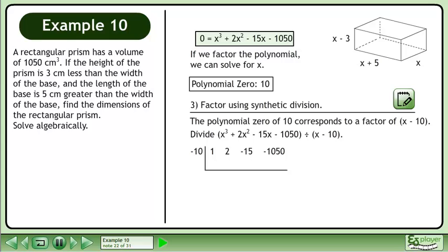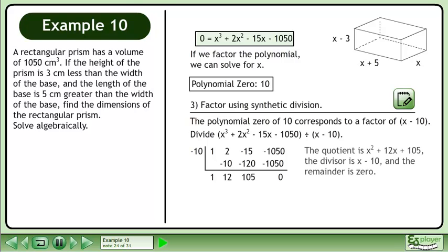Set up the synthetic division. Complete the synthetic division. The quotient is x² plus 12x plus 105, the divisor is x-10, and the remainder is 0.